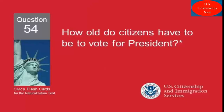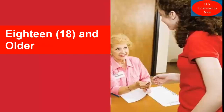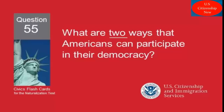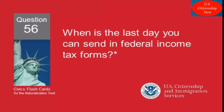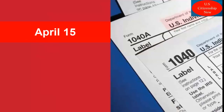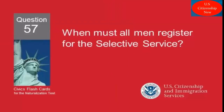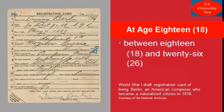How old do citizens have to be to vote for President? 18 and older. What are two ways that Americans can participate in their democracy? Vote. Join a political party. When is the last day you can send in federal income tax forms? April 15th. When must all men register for the Selective Service? At age 18.